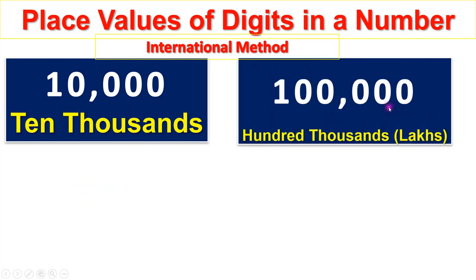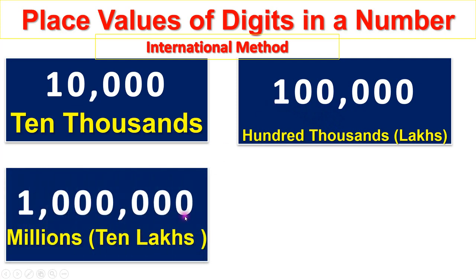Units, tens, hundreds, thousands, ten thousands, hundreds — or lakhs. Units, tens, hundreds, thousands, ten thousands, hundred thousands, millions.